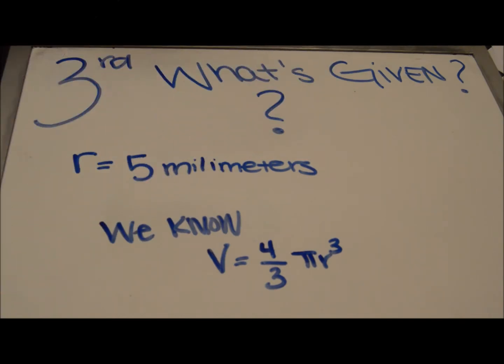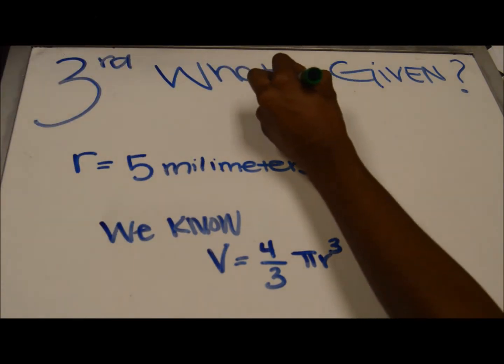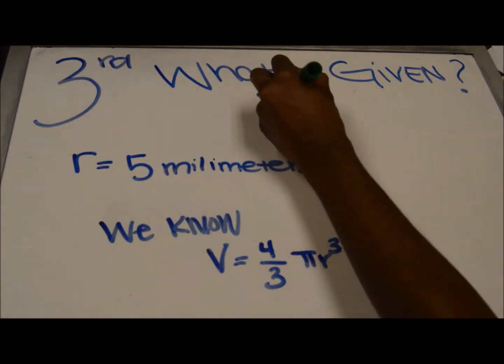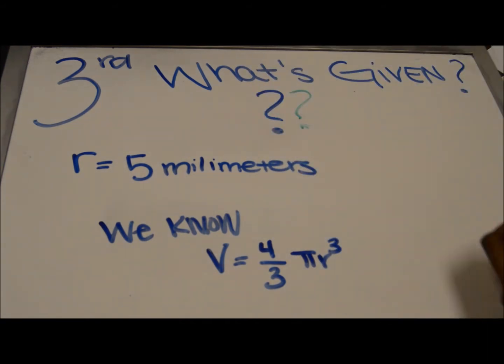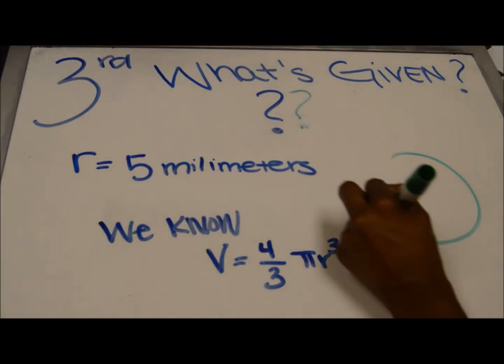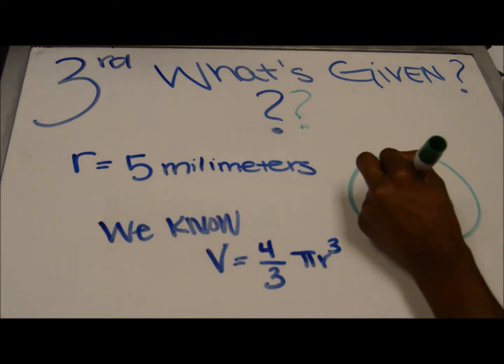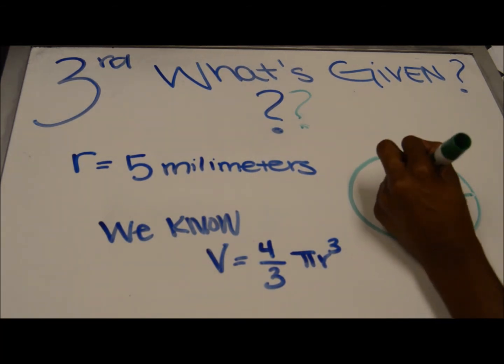After the second step, the third step is to list what's given within the problem. In this problem, we are given the radius which is 5 mm, and we know that the volume is equal to 4 over 3 pi r cubed.